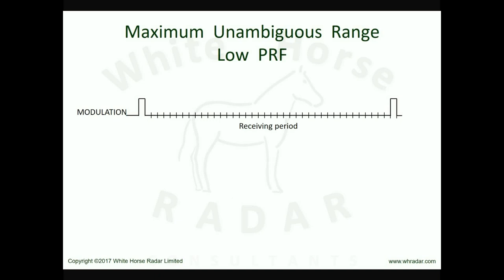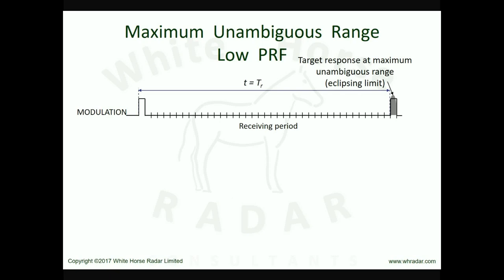Range ambiguity is avoided if we can guarantee all target returns to be first trace — in other words, being sure that the time delay T is less than the pulse repetition interval TR. The limiting case corresponds to a delay time T equaling the PRI. Such a return falls coincident with the next transmitted pulse, so the receiver would be isolated; this target falls at an eclipsed range. Nevertheless, this is the limiting case which just about avoids range ambiguity. In this limiting case, the range is known as the maximum unambiguous range, Rmu. Since the PRF is the inverse of TR, any given PRF has an associated maximum unambiguous range given by the equation shown.